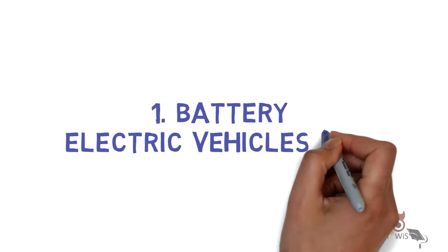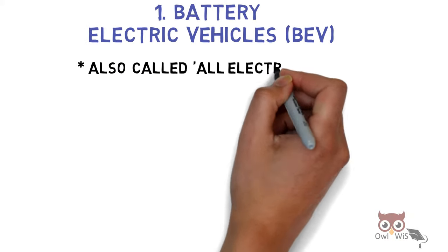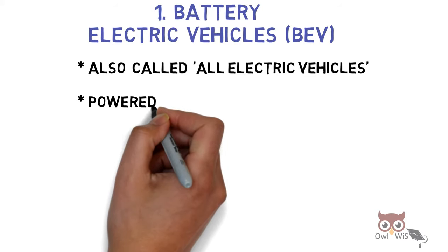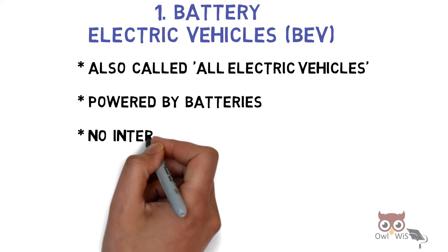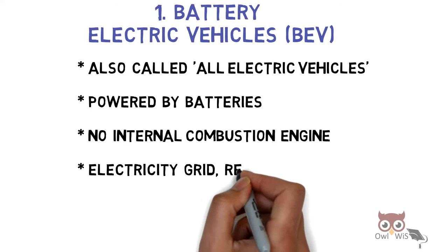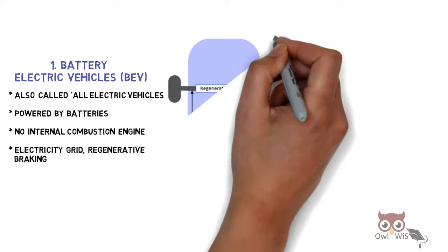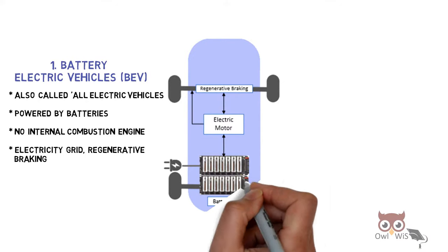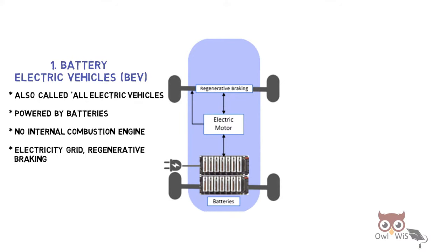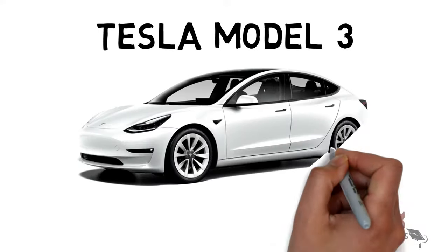Battery Electric Vehicles, also called All-Electric Vehicles, are powered by batteries. There is no internal combustion engine. They can be recharged from the electricity grid and through regenerative braking. As you can see, there is an external charge port and a large battery pack. Tesla Model 3 is an example of BEV.